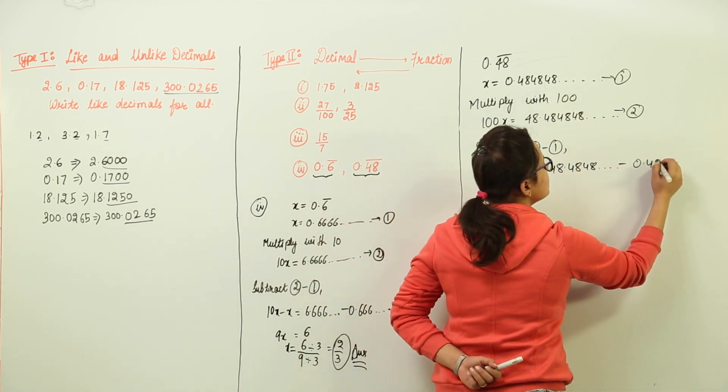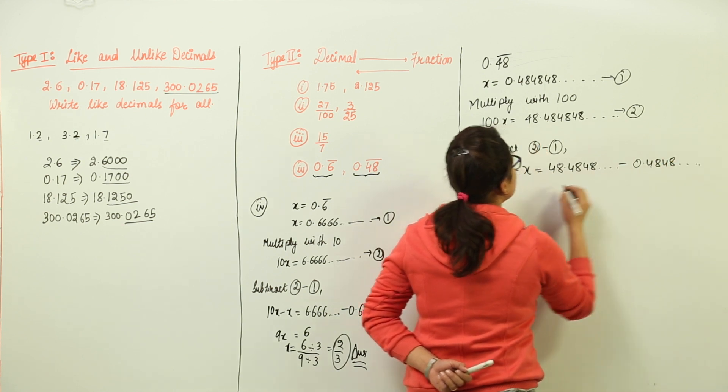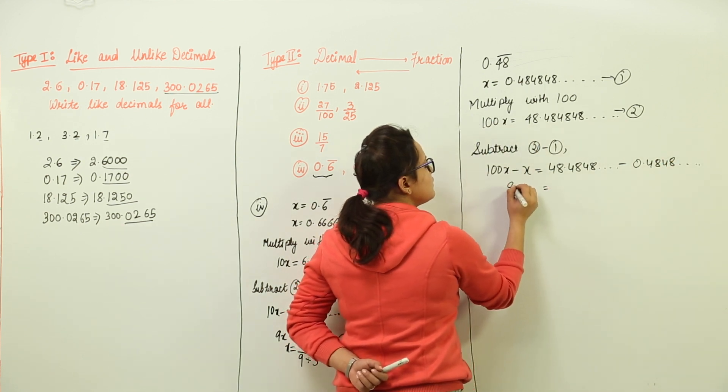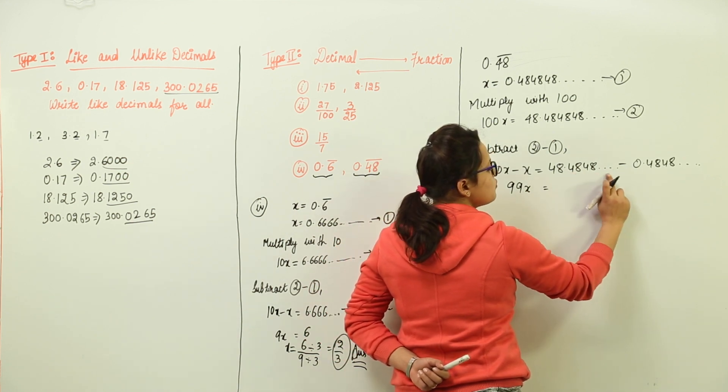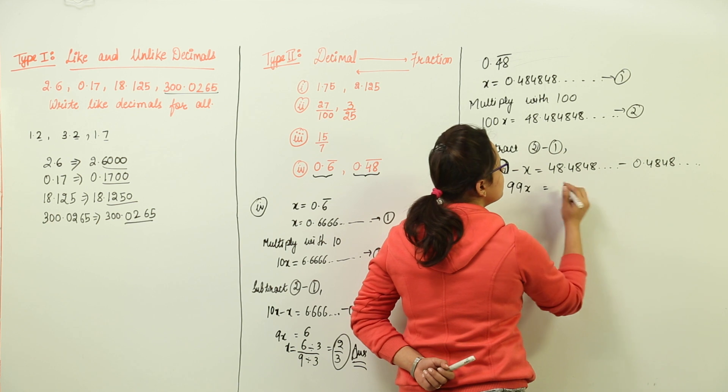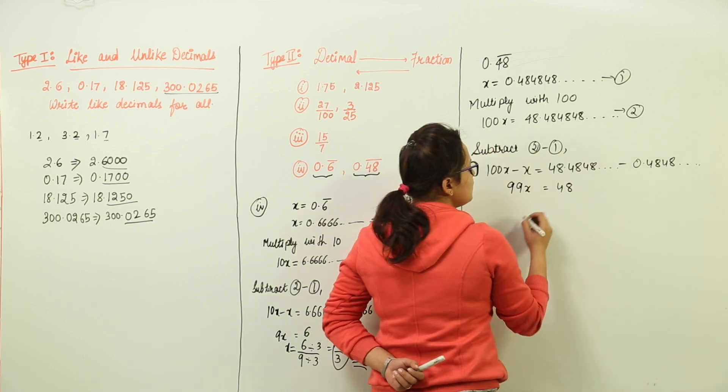So on the left hand side, we get 99x equal to 48 minus 48.48 and so on minus 0.48 that is 48 only.